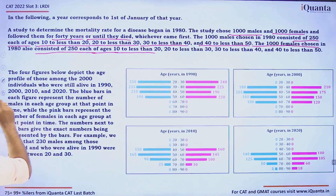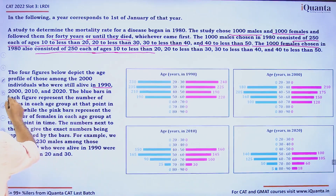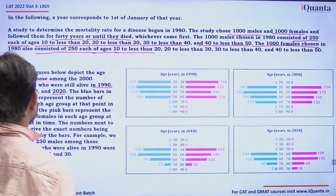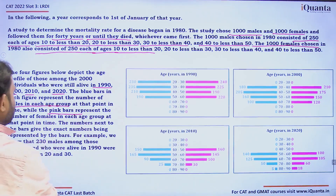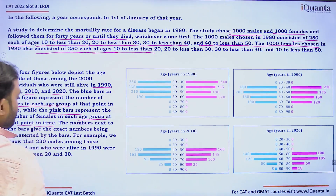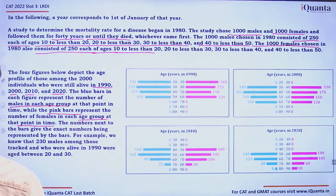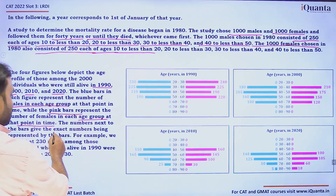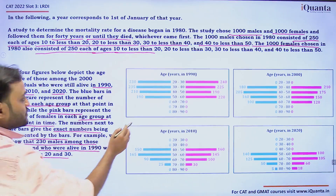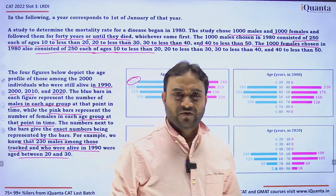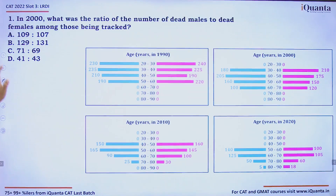The four figures depict the age profile of those among the 2000 individuals who were still alive in 1990, 2000, 2010, and 2020. The blue bars in each figure represent the number of males in each age group at that point in time, while the pink bars represent the number of females. The number next to each bar gives the exact value. For example, 230 males among those tracked who were alive in 1990 were aged 20 to 30.